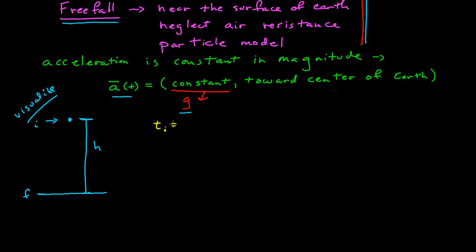Initial time — this is the time when it's released. I get to choose what my initial time is; I'm going to choose it to be zero. The final time, when it hits the ground — we solved for this last time for an expression, but at the moment I'll say I don't know what it is. I could re-solve it, but it's not given in the initial conditions of the problem, so I'll leave it blank for now.